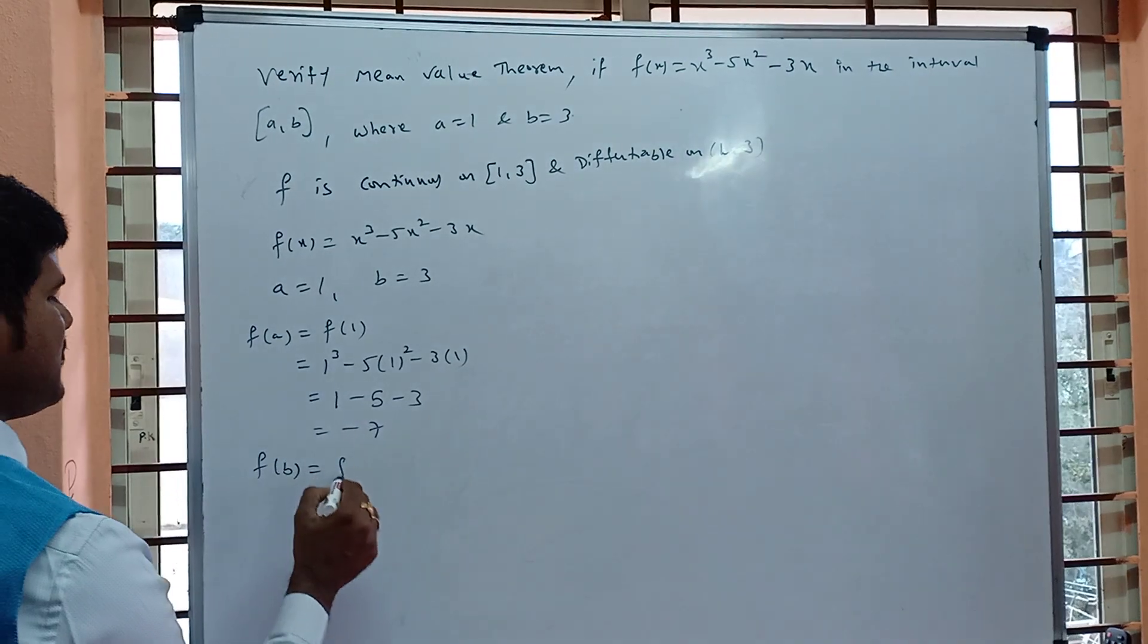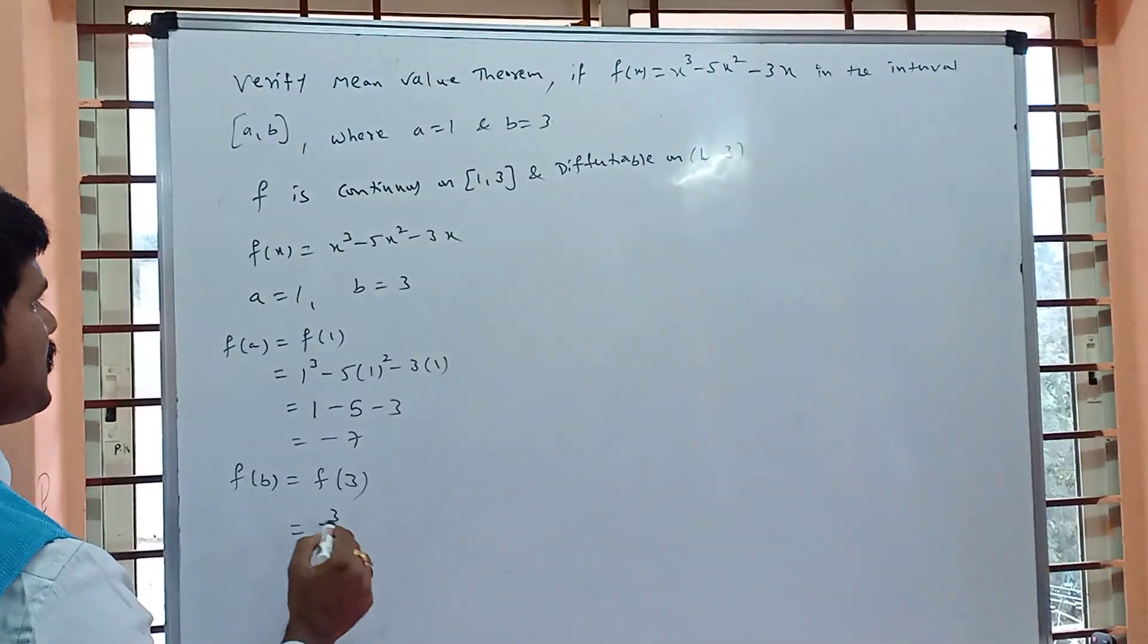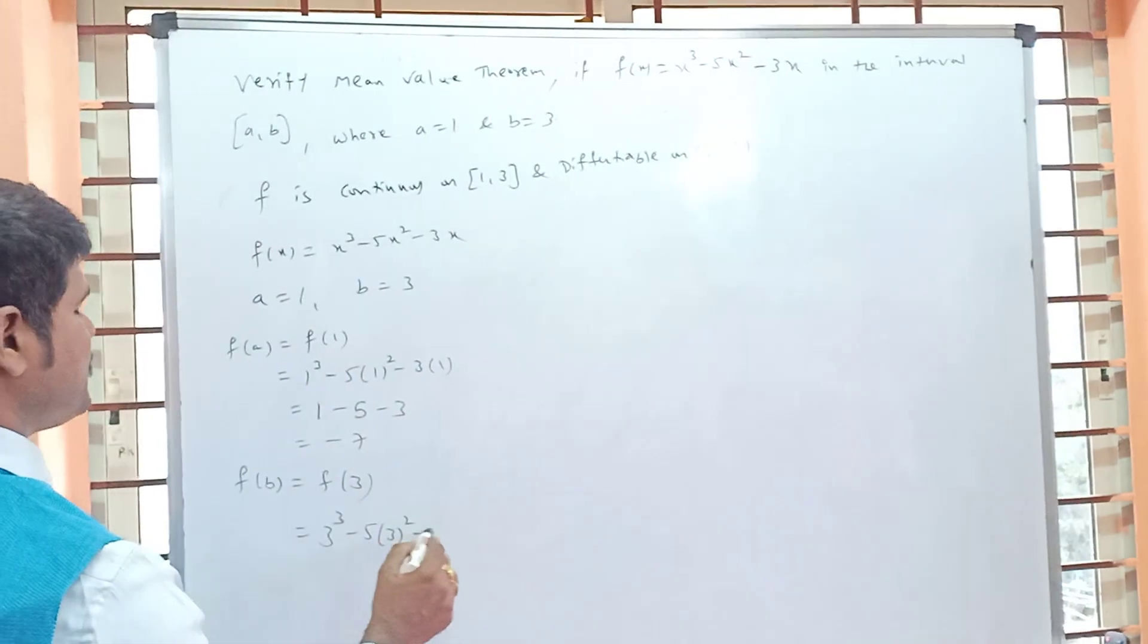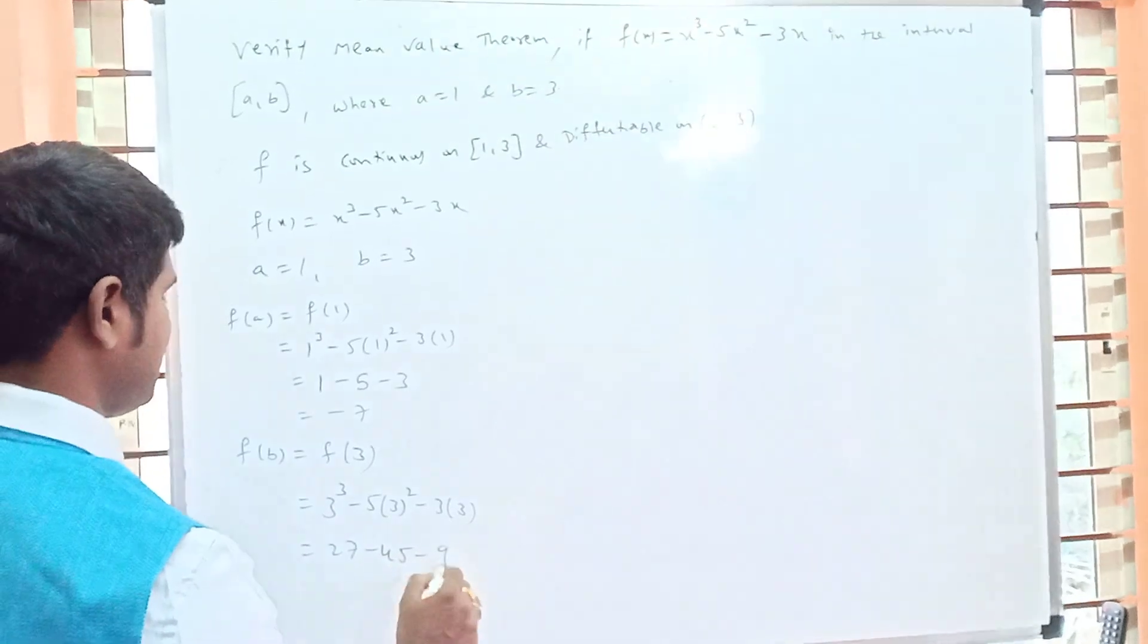Consider f(b), that is f(3). In place of x substitute 3: 3³ - 5(3)² - 3(3). 27 - 45 - 9 equals -27.